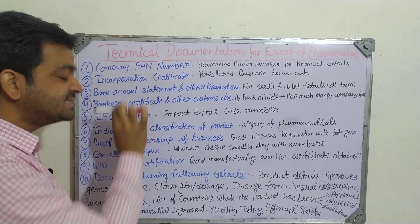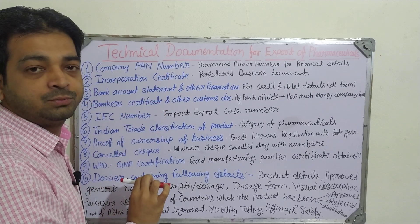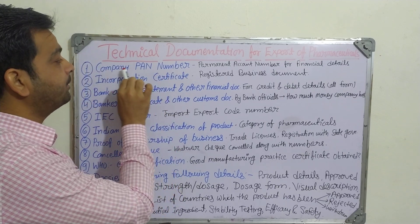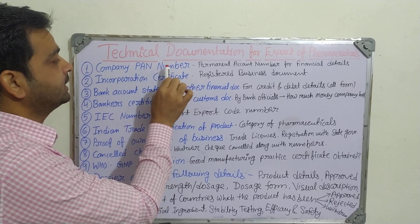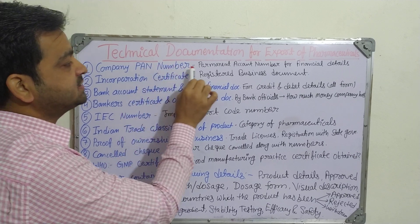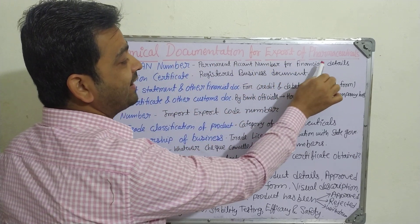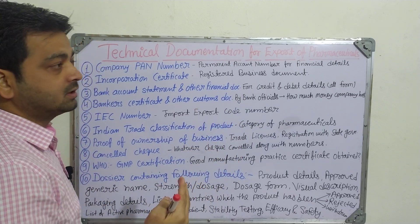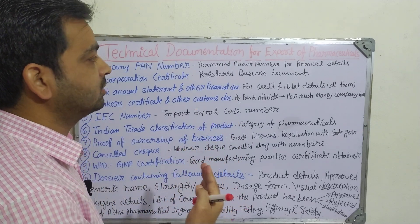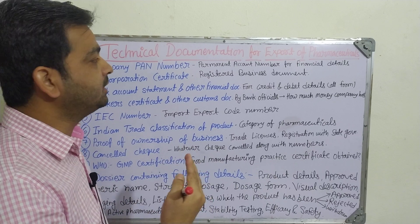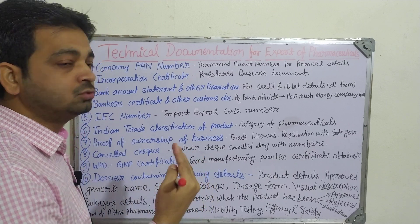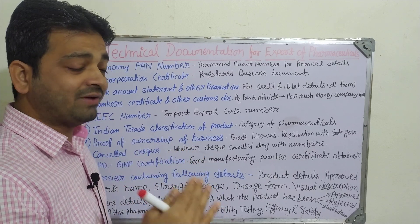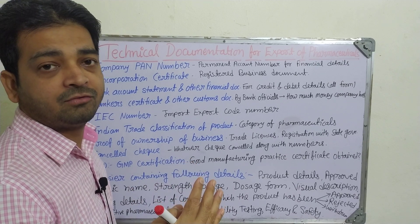These are the 10 basic documents which are compulsory. The first one is the company PAN number — Permanent Account Number — for financial details. The income tax department or the export department needs to know the financial status of the particular manufacturer.